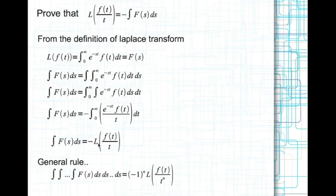In general, if you integrate the Laplace transform F(s) n times, then that is equal to (-1)^n times the Laplace transform of f(t) divided by t^n.